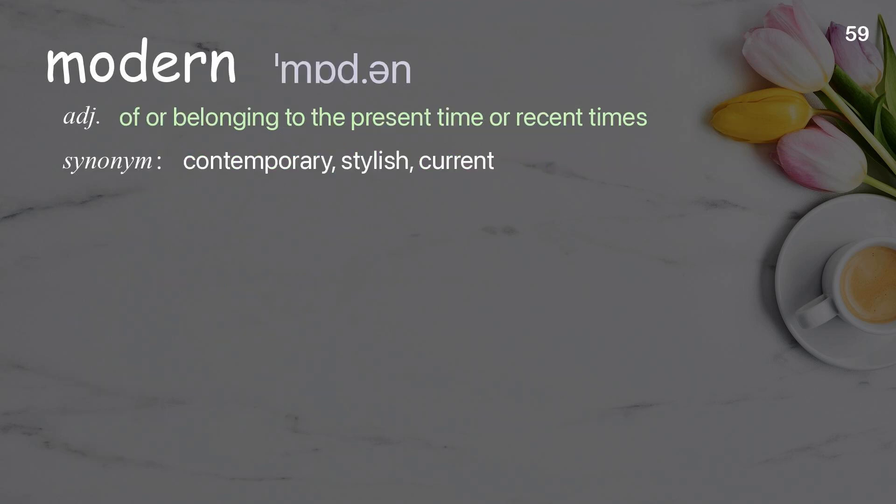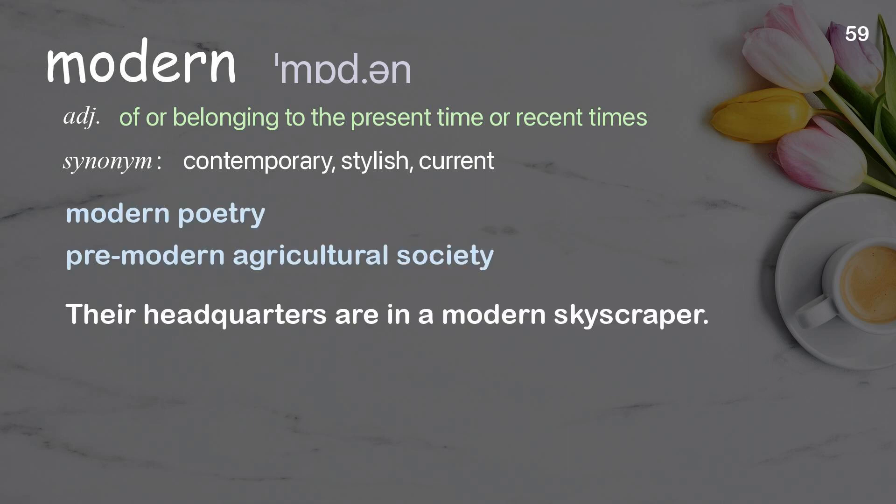Modern: of or belonging to the present time or recent times. Examples: modern poetry; pre-modern agricultural society. Their headquarters are in a modern skyscraper.